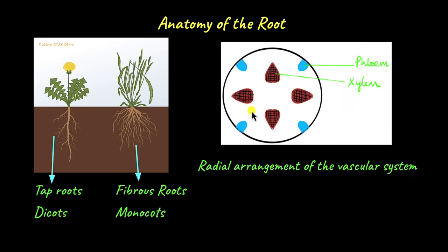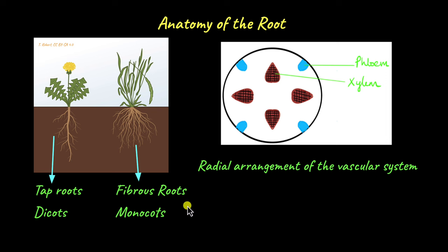Roots have vascular bundles of xylem and phloem arranged in alternating radii in a radial manner. Phloem is towards the periphery and xylem towards the center, arranged in an alternating manner — phloem, xylem, phloem, xylem. This arrangement is called radial arrangement.